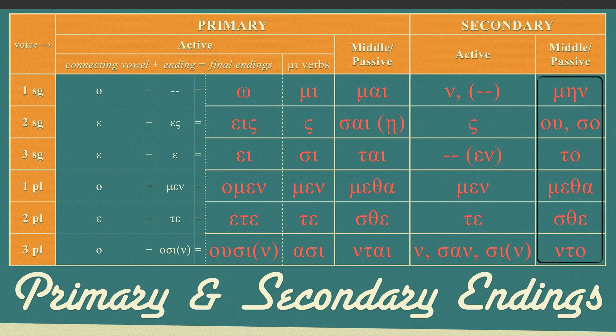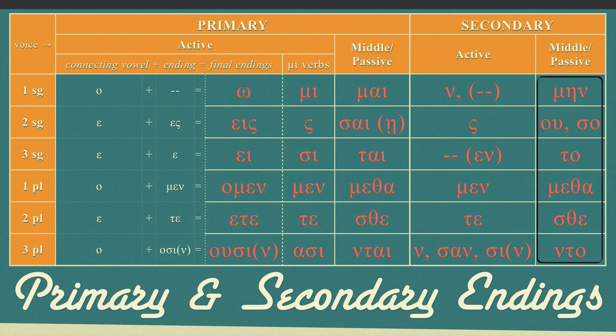Secondary middle passive endings are MAIN, U, or SA, TA, METHE, STH, NTA. I'll mention later in the video a way to help you memorize these.